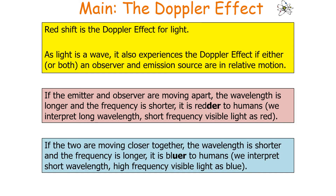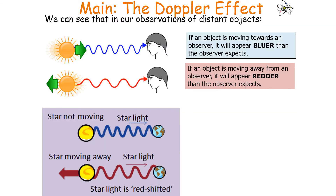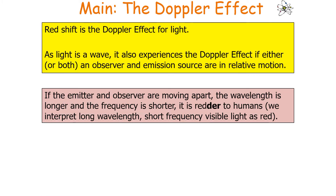If two sources are moving closer together, the wavelength is shorter and the frequency is longer so it appears bluer. When observing distant objects, if an object is moving towards an observer it will appear bluer than expected; if it's moving away from the observer it appears redder than expected. This is a very important idea to understand.